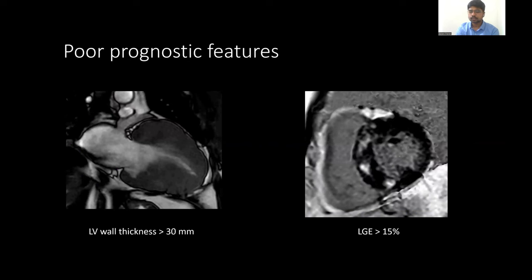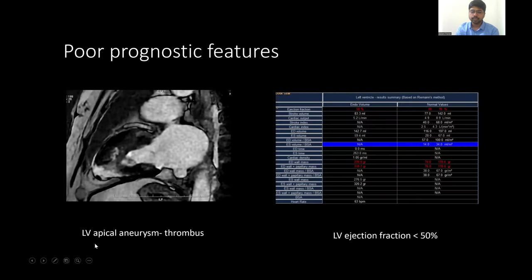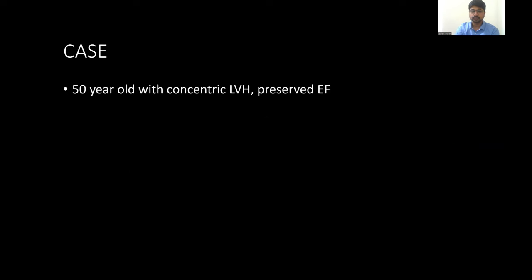The main concern in patients with HCM is sudden cardiac death. MRI can predict sudden cardiac death. Some of the markers are LV wall thickness more than 30 mm, late gadolinium enhancement involving more than 15% of the myocardial mass, LV apical aneurysm and thrombus — which can pose the risk of cardioembolic stroke — and ejection fraction less than 50%. Usually ejection fraction is preserved in HCM cases; if it is less than 50%, it indicates burned-out HCM and these patients are candidates for cardiac transplantation.